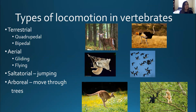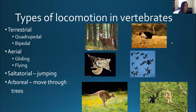Types of locomotion are also important to understand as we go through the different taxa. Terrestrial locomotion includes quadrupeds walking on four limbs and bipeds on two — like humans or ostriches. Aerial locomotion can be either gliding like a flying squirrel or actual powered flight like birds or bats. Saltatorial refers to animals that get around by jumping. Arboreal describes those that move through the trees, and some primate species very rarely even touch the ground — they spend their lives in the trees without flying or jumping.